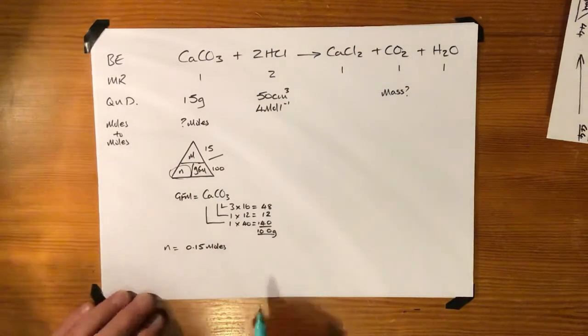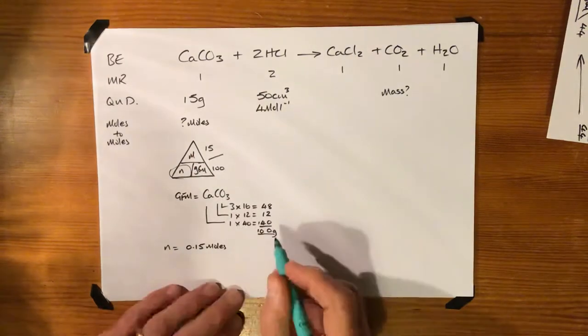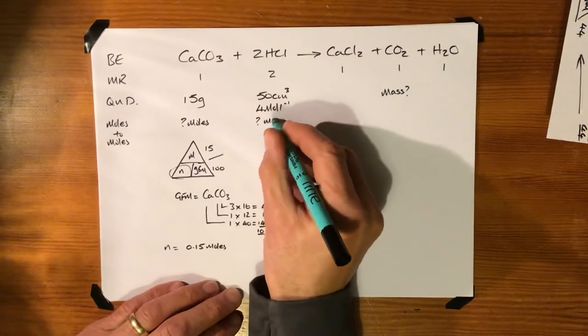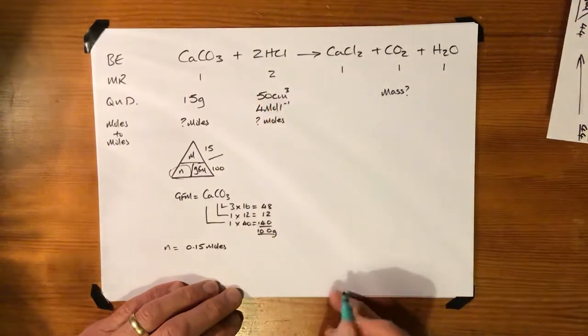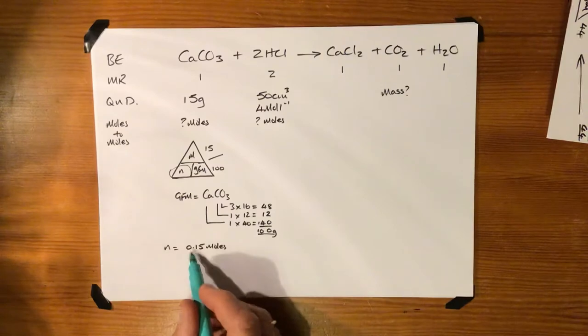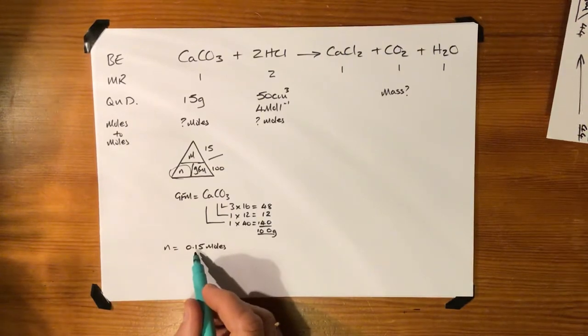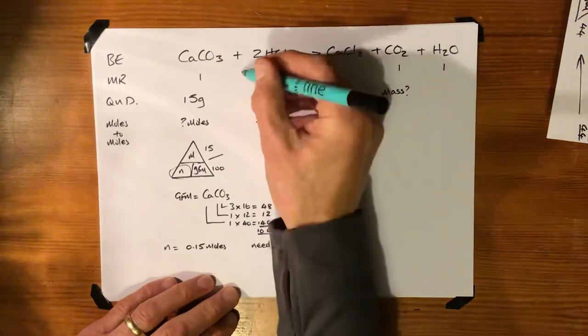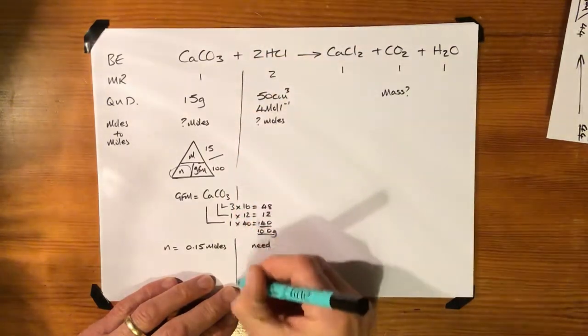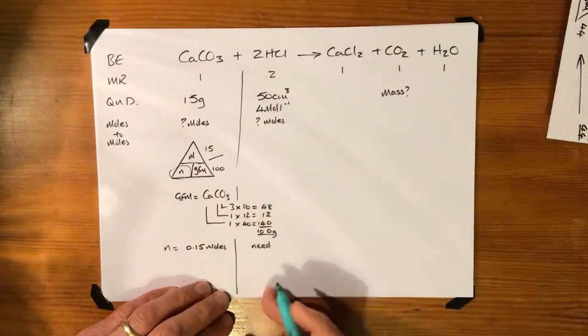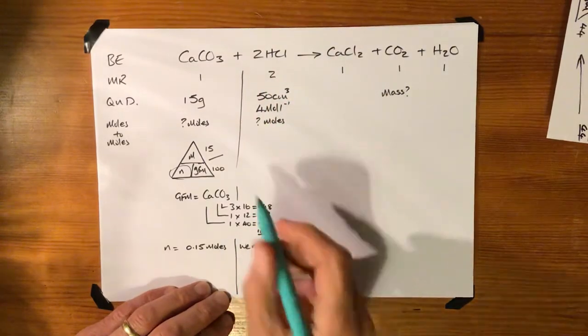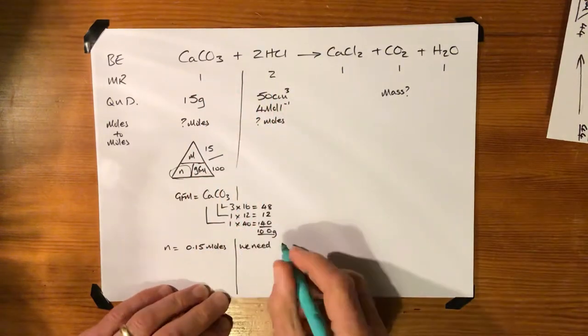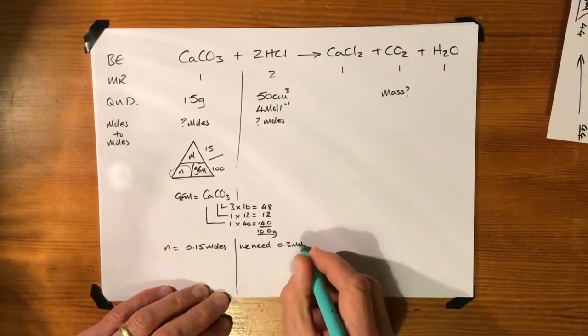Right, so if we've got 0.15 moles, we need to come over here. We need to work out the number of moles that we need on this side. So 0.15 moles required. And here we need—now try and bear with me, I'm doing this—this is in this column here. We need twice as many. It's a one to two ratio. We need twice as many, so we need 0.3 moles.